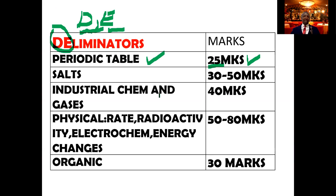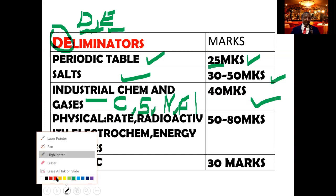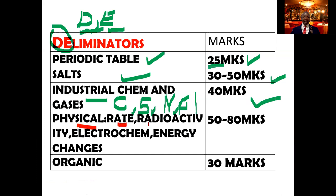The first deliminator topic is the periodic table. This topic alone contributes around 25 marks in the KCSE — about 10 marks in paper one and 14 marks in paper two. Salt and salt analysis contributes 30 to 50 marks — just one topic — because question two of paper three requires understanding of salt and salt analysis. Industrial chemistry, covering the chemistry of carbon, sulfur, nitrogen, chlorine, and metals, including the preparation of gases like carbon dioxide, carbon monoxide, and sulfur dioxide, attracts about 40 marks. Physical chemistry — rate, radioactivity, electrochemistry, and energy changes — may give you about 50 to 80 marks because you get like three questions from this particular area.